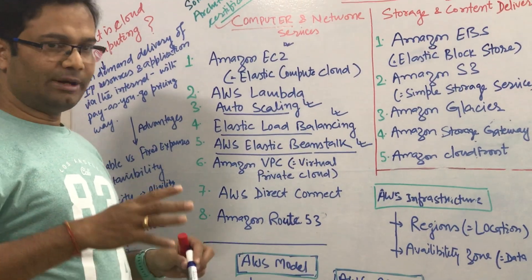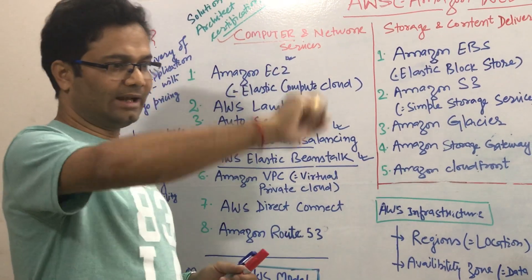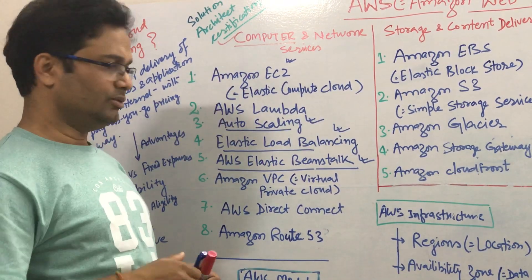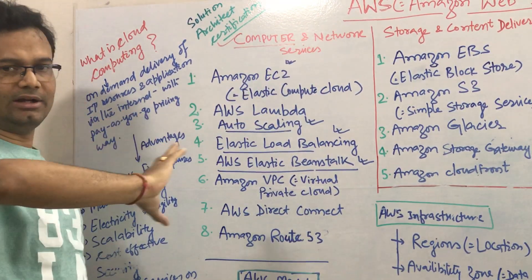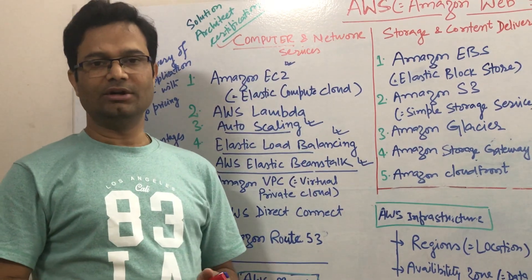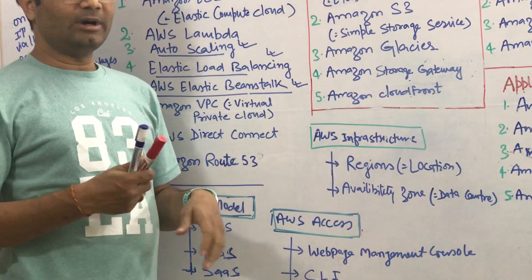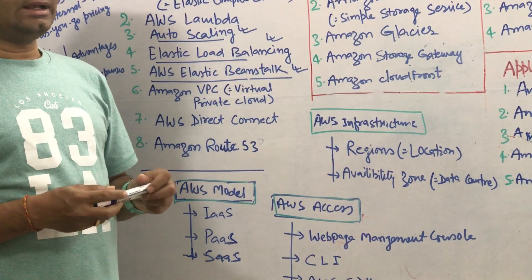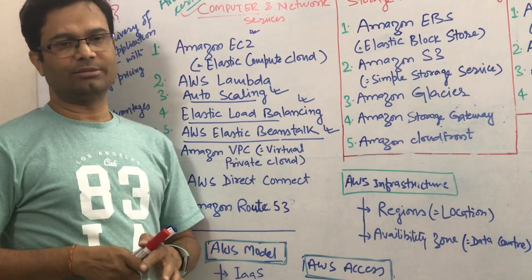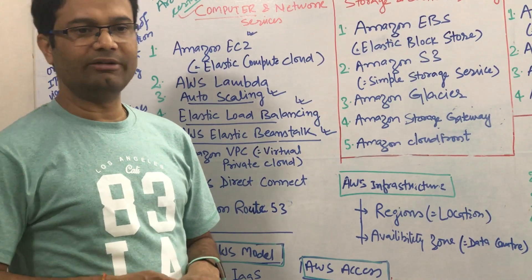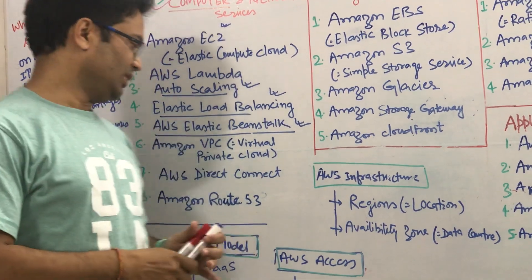Direct Connect — suppose you have some infrastructure in your premises and some infrastructure in AWS and you want a dedicated connection between them. Then you can use the AWS Direct Connect facility. Next is Amazon Route 53. It provides DNS — domain name service. So if you have an IP address that customers cannot easily remember, you can convert that IP address into a domain like ABC.com. That facility you can get.